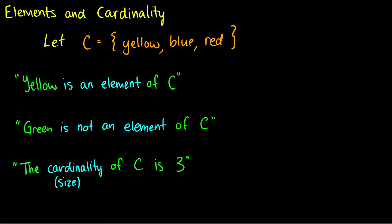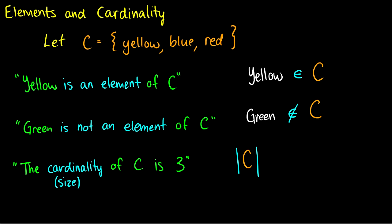How do we write this? We have the element yellow, and we want to say it's part of set C. We use the epsilon symbol — so yellow ∈ C. What about saying green is not in set C? We use the set membership symbol with a line through it to mean green ∉ C. How do we talk about the size? To say the size of C is three, we draw absolute value bars around it: |C| = 3. That says the cardinality of C is three.